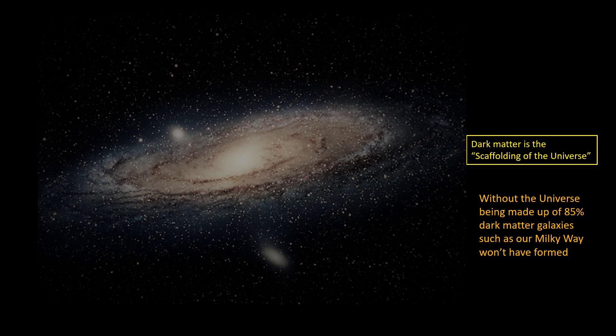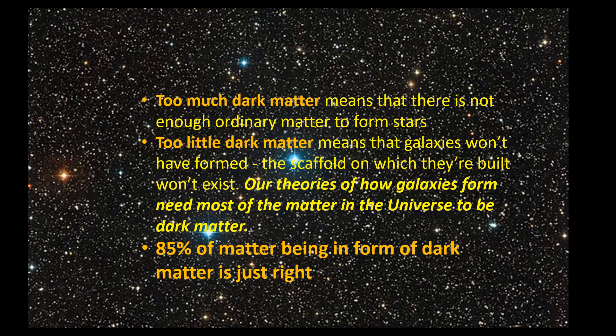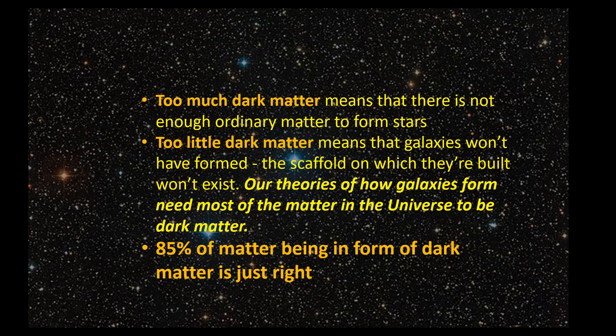Our current theories of galaxy formation indicate that most matter in the universe must be dark matter for this to have occurred. However, if the amount of dark matter were 99% rather than 85%, there just wouldn't be enough ordinary matter for stars and galaxies to have formed in the first place. Or to put it another way, if there's too much or too little dark matter, then the universe would be completely dark and devoid of stars and galaxies.